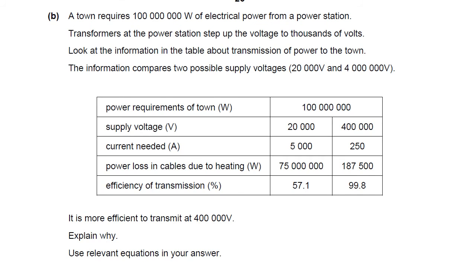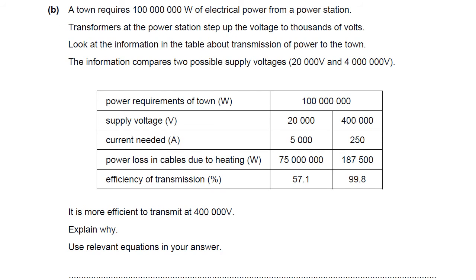A town requires 100 million watts of electrical power — watt is the unit of power. Transformers at the power station step up the voltage to thousands of volts. Don't get confused between watts (W) and volts (V). Look at the information in the table about the transmission of power to the town.